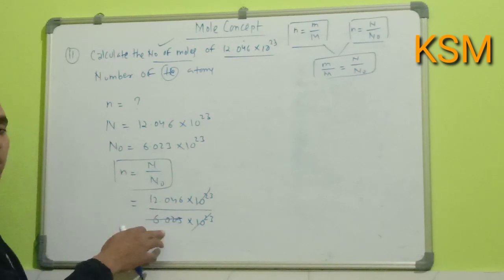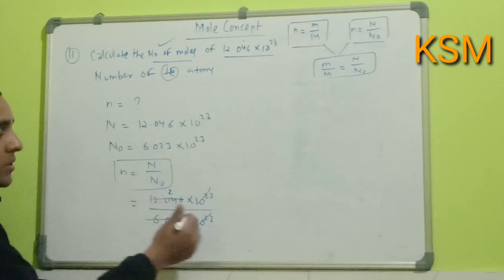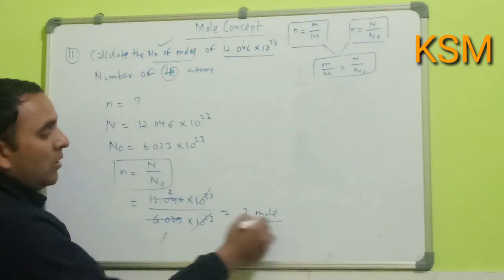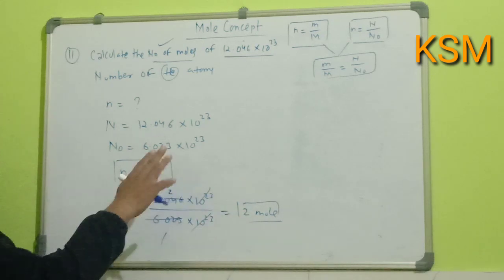Looking at the multiples of 6.023: one term is 6.023, two terms is 12.046. So the answer is 2, that is 2 moles.